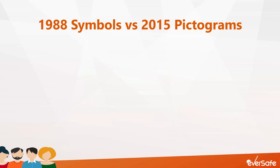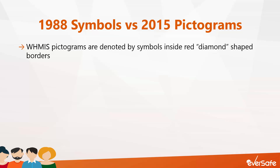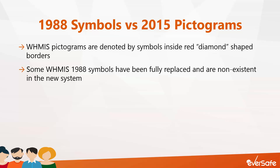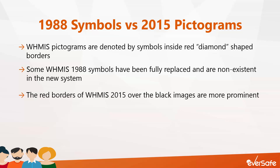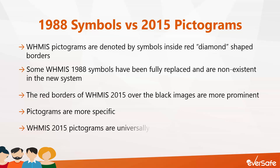There are definitely similarities but also differences between WHMIS 1988 symbols and WHMIS 2015 pictograms. While the 1988 symbols were denoted with symbols inside black circled borders, the WHMIS 2015 pictograms are denoted by symbols inside red diamond-shaped borders. Some WHMIS 1988 symbols — such as the exclamation T that stood for other toxic effects and the R for dangerously reactive — have been fully replaced and are non-existent in the new system. The red borders of WHMIS 2015 pictograms make the black symbols more prominent and visible than the black borders and black symbols used in WHMIS 1988. New images such as the exploding bomb, health hazard, and exclamation mark have made the new pictograms much more specific and useful. In WHMIS 2015, pictograms are universally accepted, while WHMIS 1988 symbols are not.